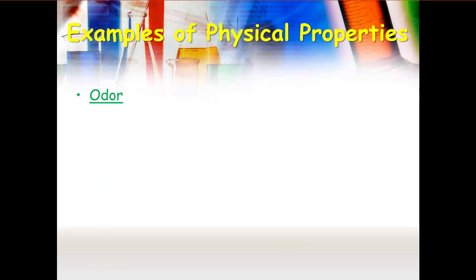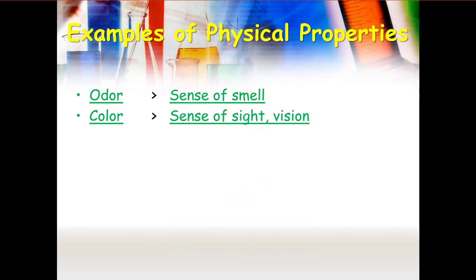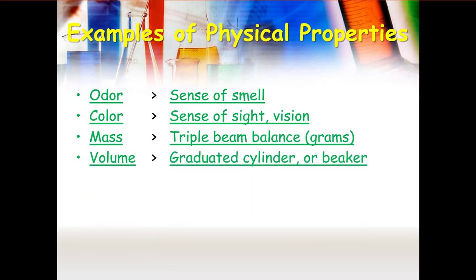Examples would be odor, smell, sense, color, which is sensed with your sight, your vision. Mass, which we would measure with a triple beam balance in grams. Volume, which we would measure with a graduated cylinder or a beaker. Density, which is only calculated by having mass and volume. You calculate density with the formula mass divided by volume.